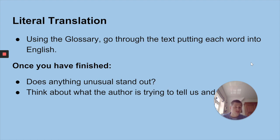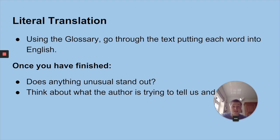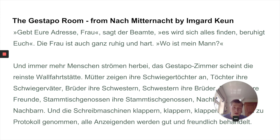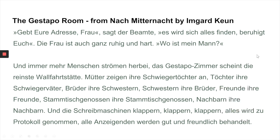Have a think about things that are different to English or other languages you study — that might be to do with word order, the way German structures things, or its use of capitals. Be aware and on the lookout for differences from other languages you know, and also think about what's going on in the passage. That's all I ask for the literal translation. Don't overthink it, throw it into English and enjoy. I'll leave you with the text, and I'll see you in the next part where we talk about what's going on in the book more generally.